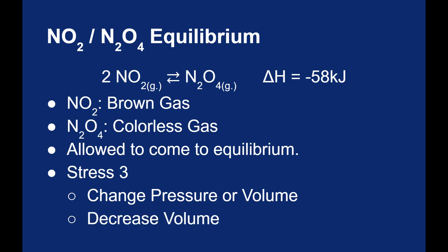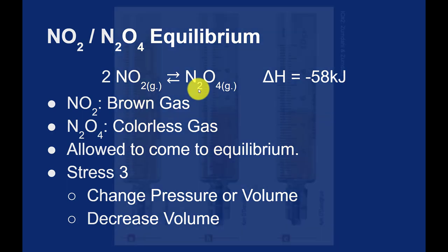Another way to change the pressure would be to change the volume. So if we decreased the volume of the container, then the equilibrium would try to decrease its volume. Well, look at the process. I have two moles of gas on one side, and only one mole of gas on the other. Which means the reactant side here takes up more volume than the product side. So if the stress is to decrease the volume, well then the gases will try to decrease the volume to accommodate. That means they're going to shift to the right.